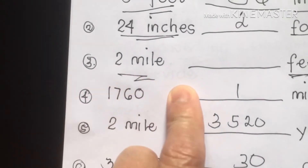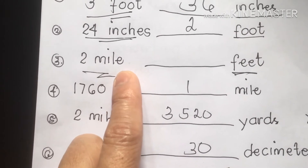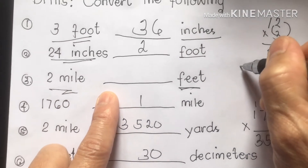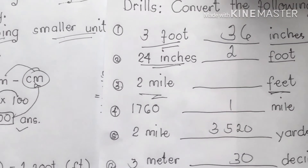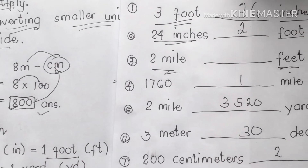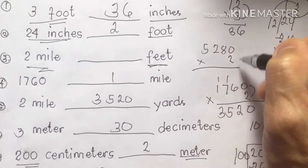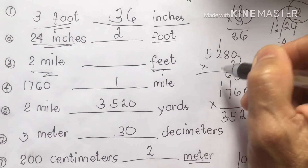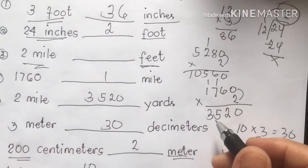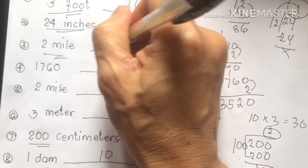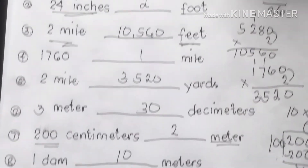And number 3 class: 2 miles, how many feet? Sorry, I forgot it earlier. 5,280 feet is equivalent to 1 mile. So we are going to multiply 5,280 by 2. The answer is 10,560 feet.